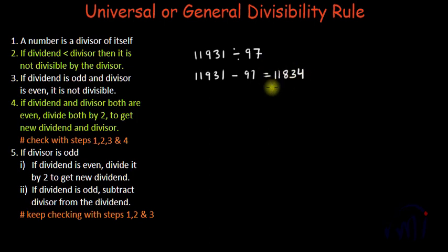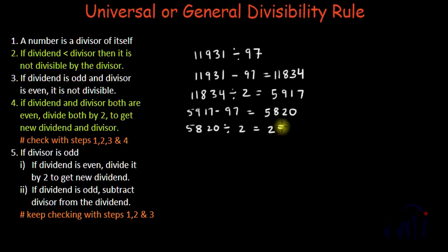This is even, so divide by 2: we get 5,917. This is odd, so subtract 97: 7 minus 7 is 0, 11 minus 9 is 2, giving 5,820. This is even, so divide by 2: we get 2,910.